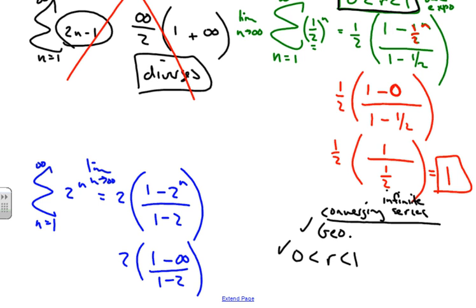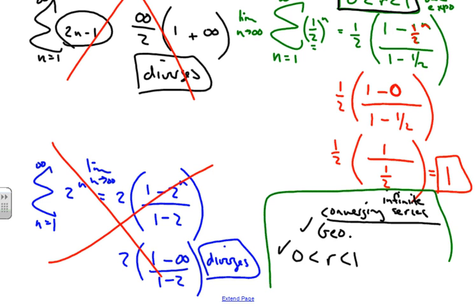Well, 1 minus infinity is not a number, so right here this diverges. So really, as with the arithmetic, the only ones that converge right here are where you have a geometric, and the ratio is less than 1 greater than 0. Those infinite series converge.